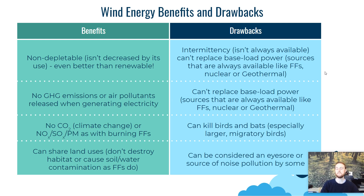Another major drawback is intermittency. Just like solar, we can't generate wind electricity 24/7, and we don't have batteries large or efficient enough to store it for times when the wind isn't blowing. Wind cannot replace what we call base load power — sources available 24/7 with no intermittency, such as fossil fuels, nuclear energy, and hydroelectricity from dams. Wind is great for supplementing base load sources, but we can't take fossil fuel power plants offline and totally replace them with wind. Intermittency remains the big problem.